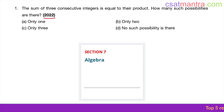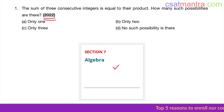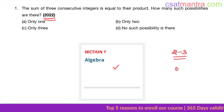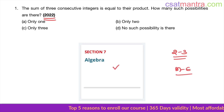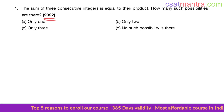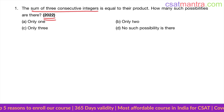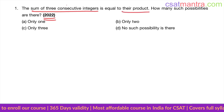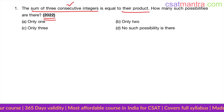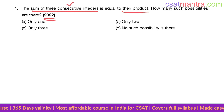Namaskaram. This question is asked in 2022, based on algebra. From algebra, every year you can expect two to three questions, which will be moderate to easy in nature. This is a scoring lecture you should not miss. The problem: the sum of three consecutive integers is equal to their product.